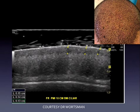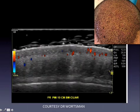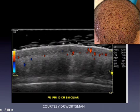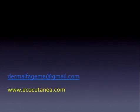Here is an example of hair follicle implants. You can see the inflammation and vascularization around these implants. Fine vascularization around the hair follicle is a good sign and is predictive of survival. To conclude, hair follicle anatomy can be studied with ultrasound, different diseases have different patterns which can aid proper diagnosis in alopecias, and ultrasound is an excellent tool to offer objective prognosis and treatment guidance to the clinician. Thank you very much for your attention.